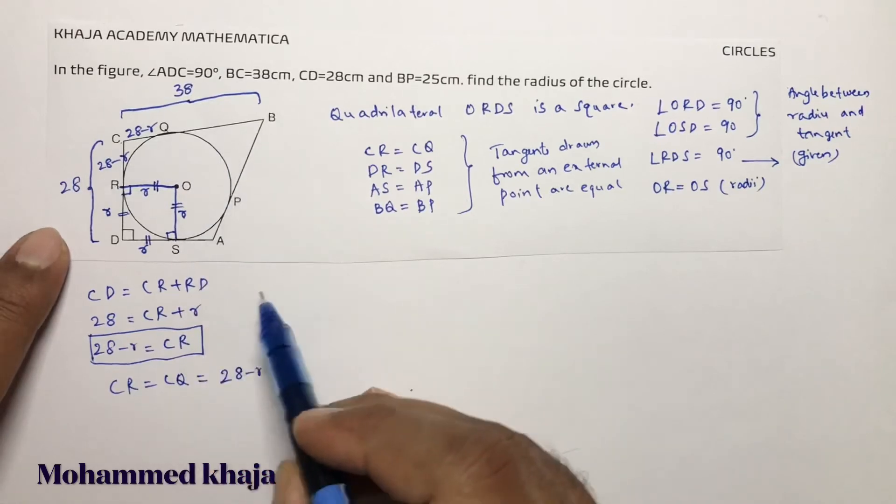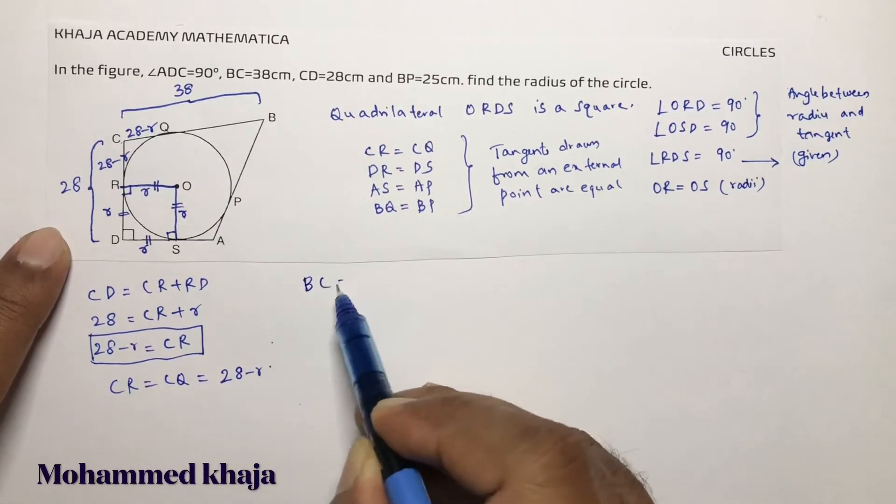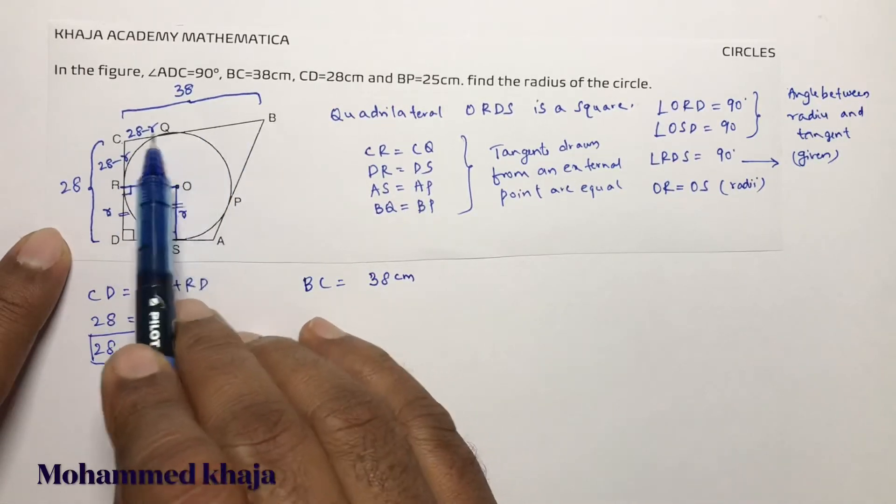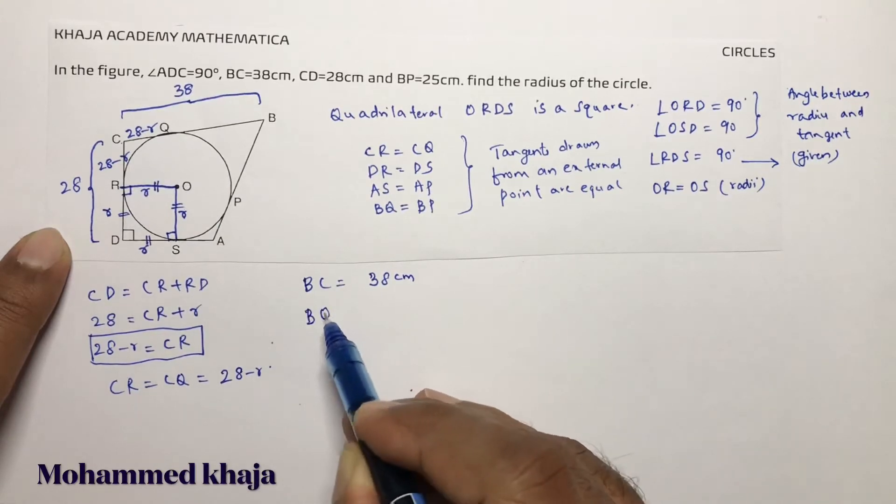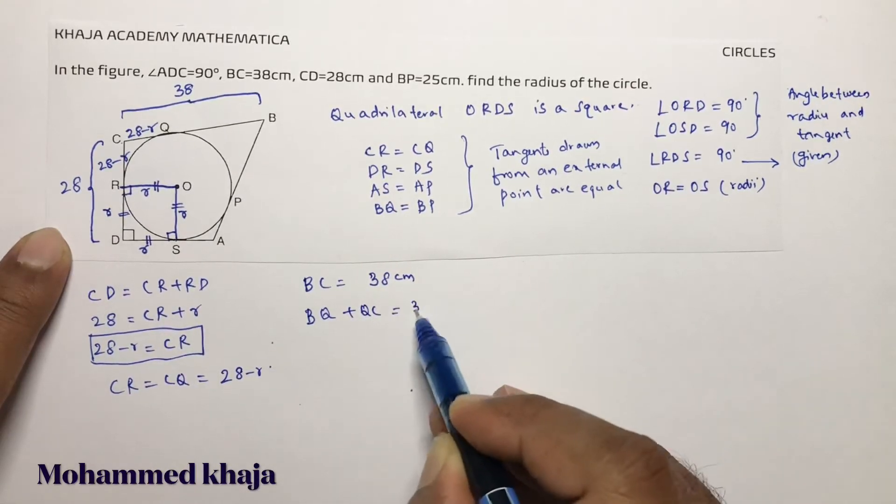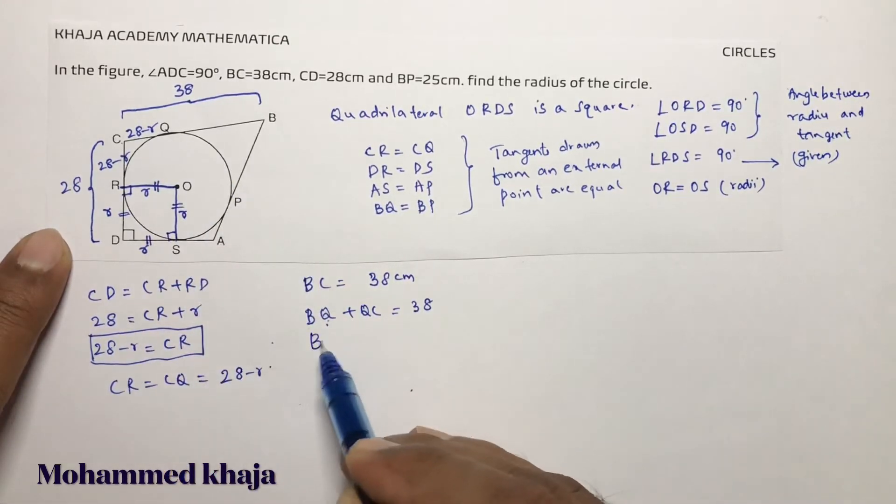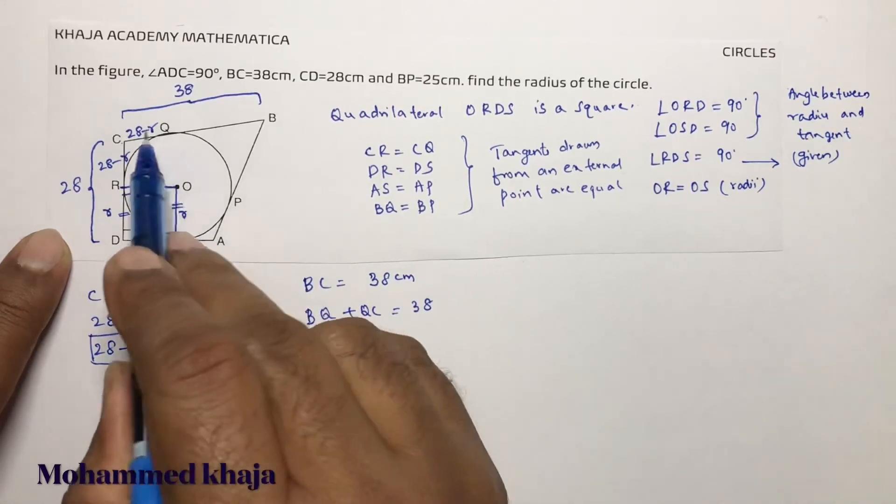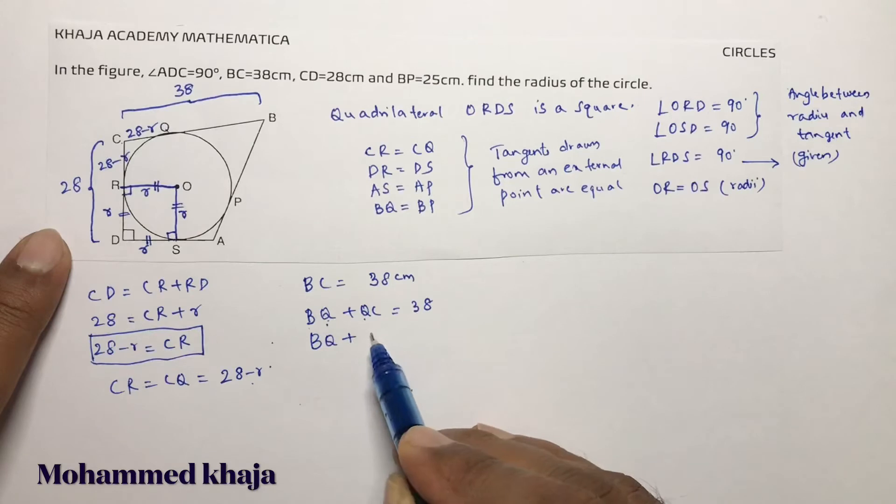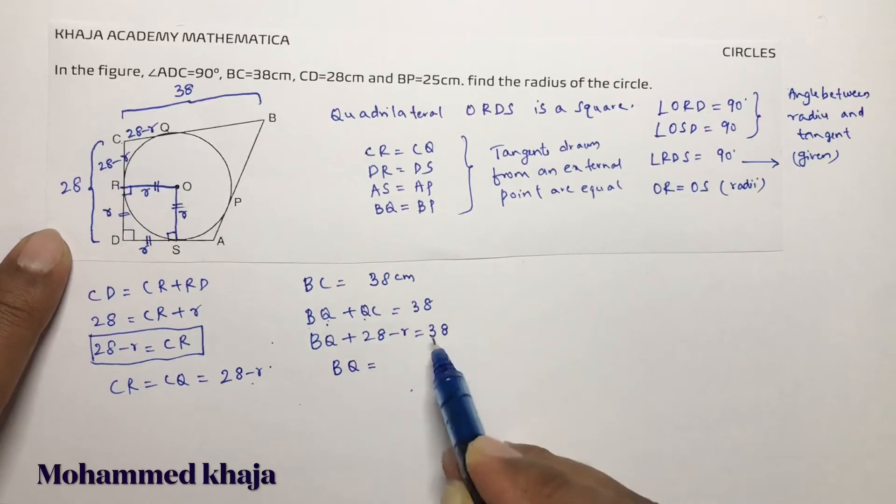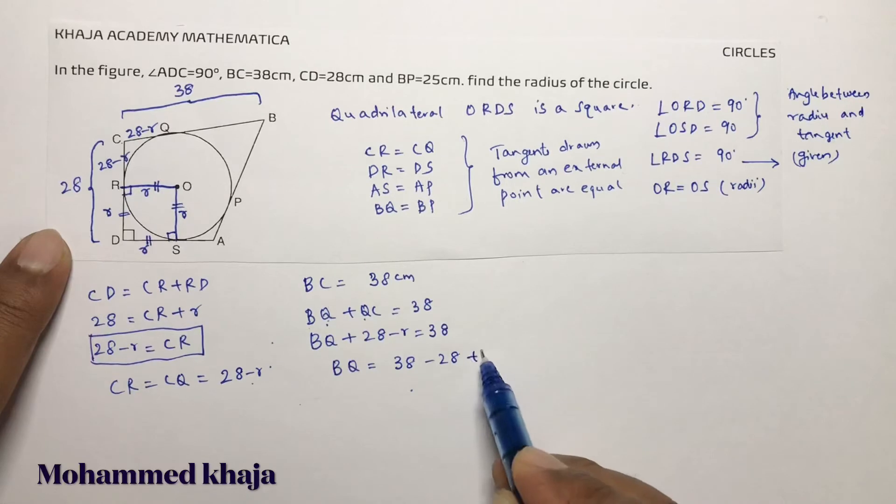BC is 38cm. BC is BQ plus CQ. BQ plus QC is 38. What is BQ? We don't know BQ. So BQ plus QC, QC value is 28 minus R. So BQ plus 28 minus R is 38. So BQ equals 38 minus 28 plus R. So BQ equals 10 plus R.